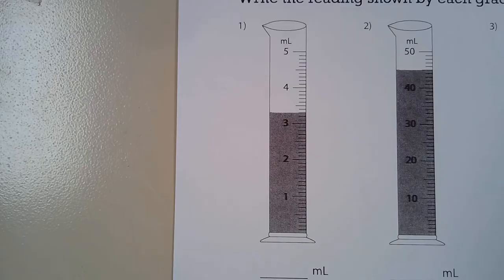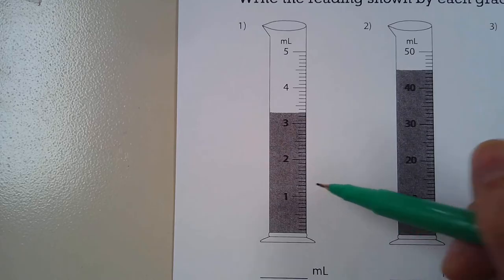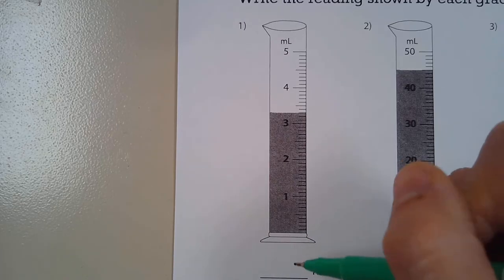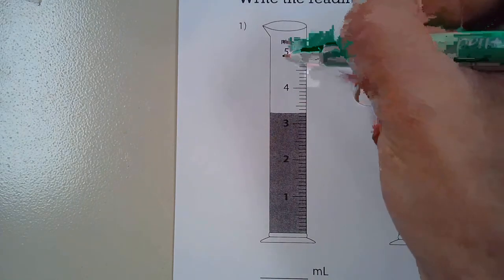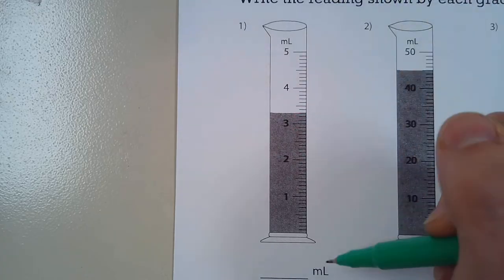What that means is what are those littlest lines counting by. The bottom is always zero milliliters and this tells us how much volume the liquid holds. This particular one only holds five milliliters, so your answer will never be above five for this graduated cylinder.